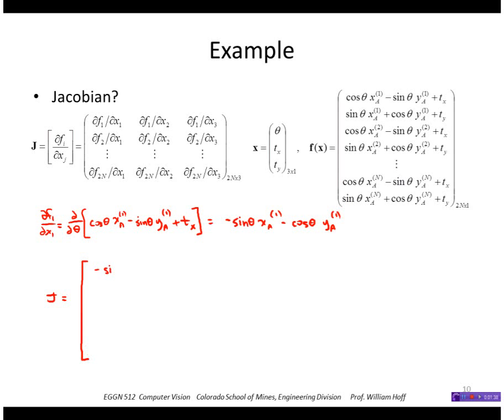Minus this what I just computed: sine of theta times xa1 minus cosine theta times ya1. The second column is a 1, the third column is a 0. Second row I'm going to get cosine theta.